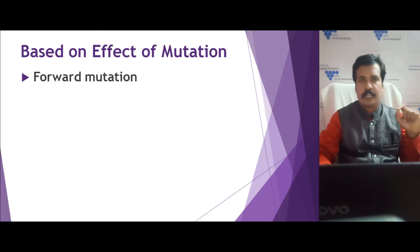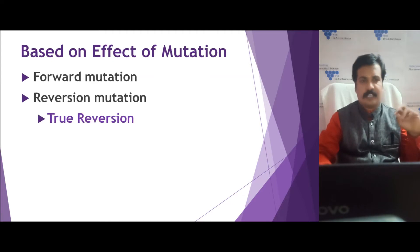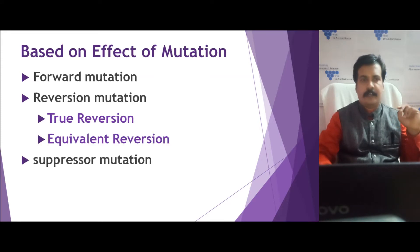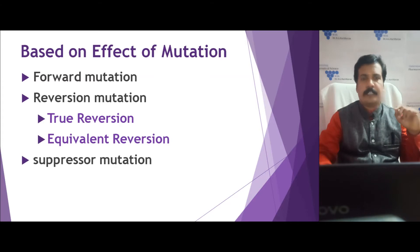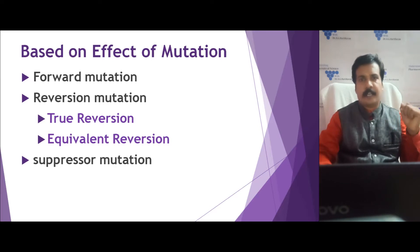The three types are: first, forward mutation; second, reversion mutation, which can be further classified into true reversion and equivalent reversion; and third, suppressor mutation. Suppressor mutation is more or less a type of reversion mutation. We will discuss each type and its mechanism separately.